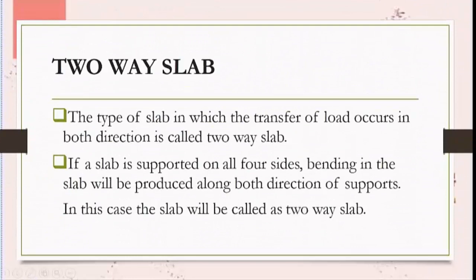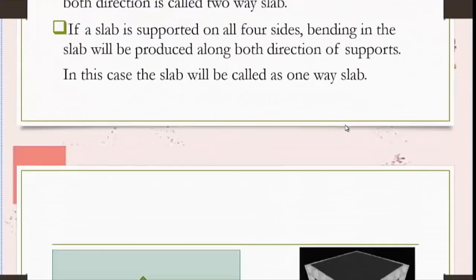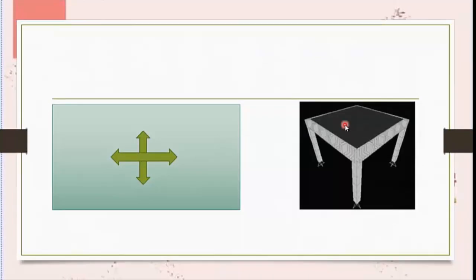The second type of slab is the two-way slab. The type of slab in which the load transfer mechanism occurs in both directions is called a two-way slab. If the slab is supported on all four sides, bending will be produced in all directions and the slab will be termed a two-way slab. You can see in the picture that the load is transferred in the shorter direction as well as the direction perpendicular to it, and bending is produced in four directions.